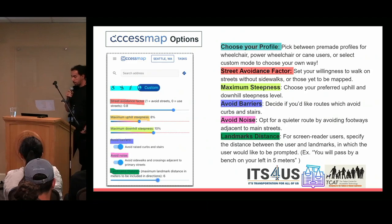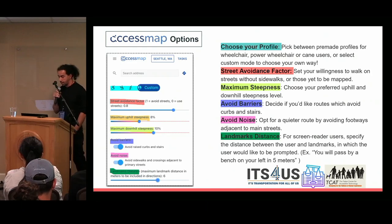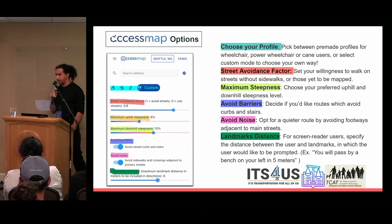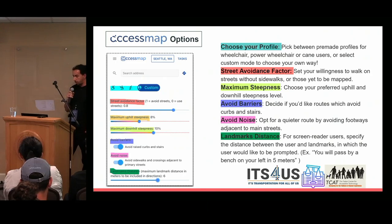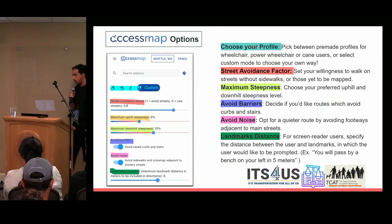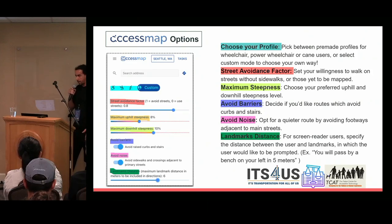The app also includes options for avoiding barriers — for wheelchair and cane users, do you want to avoid stairs or raised curbs in your route? We started adding additional things like avoiding noise; for now it's simply avoiding main streets, highway equal primary. And landmarks distance is for screen reader users: a cane user only wants landmarks within one meter that they can touch and verify they are on the right track.